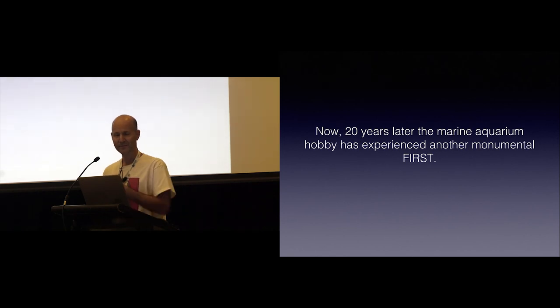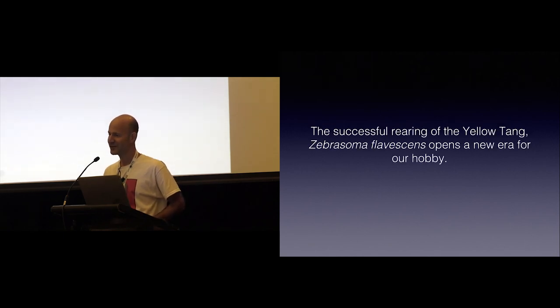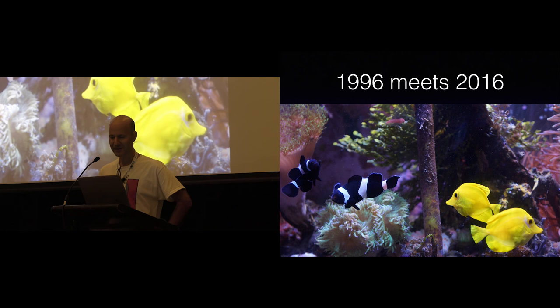Twenty years later, the marine aquarium hobby has experienced another monumental first. Many of you are aware that the yellow tang, Zebrasoma flavescens, was recently reared in captivity in relatively large quantities. And that also resulted in beating the path and making people who were working hard at the University of Florida to raise the blue tang, the hippo tang, succeed in rearing that one just a few months back. So, here we are, 1996 meets 2016. I got a pair of those Zebrasoma flavescens and put them together with my pair of Darwin clowns to take this picture. And just mark the moment and say it's really special. And it's so great to be a marine aquarium hobbyist at this time when wonderful things are happening in our trade.